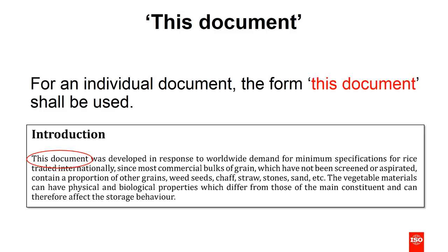For an individual document, the phrase 'this document' should be used throughout when referring to the document itself. For example, the introduction might say: 'This document was developed in response to worldwide demand for minimum specifications for rice.' This ensures it always clearly refers to the document being used at that time.